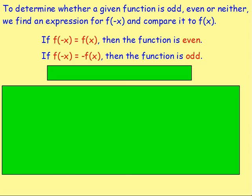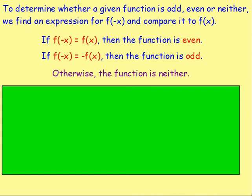To determine whether a function is odd, even, or neither, what you do is you find an expression for f of negative x and then you compare it to f of x. If f of negative x is the exact same as f of x, then the function is even. If you end up getting the negative of f of x, then the function would be odd. If you end up getting neither of these — if you don't get f of x or negative f of x — then the function would be neither odd nor even.